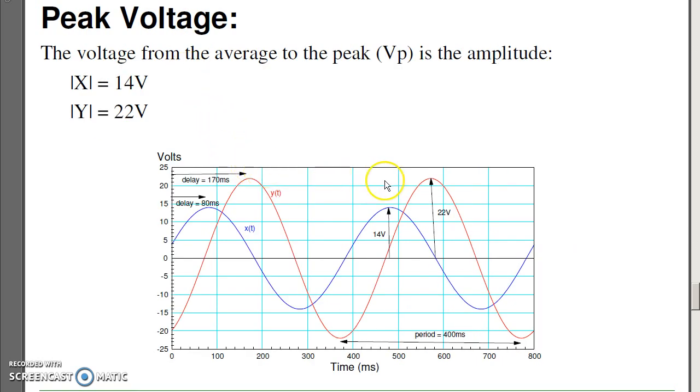The peak voltage is, fairly obviously, just the amplitude of the peak. Here, y, the red line, is 22 volts peak. The blue line is 14 volts peak.